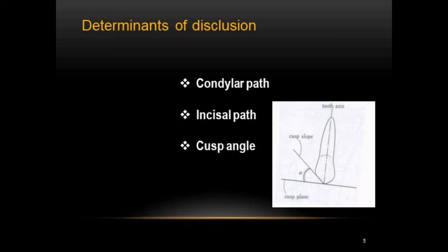Coming to the determinants of disclusion, there are three important determinants: the condylar path, the incisal path, and the cusp angle. As seen in the picture, the cusp angle is the angle made by the average slope of the cusp relative to the cuspal plane.